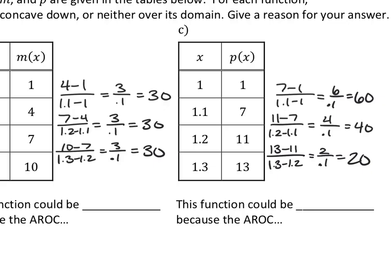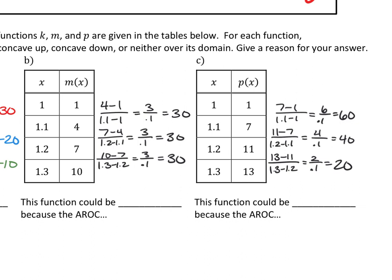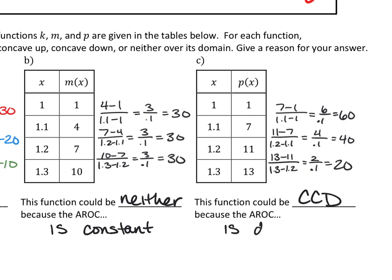Are these the numbers you got for your rates of change? What do we notice about B? It's constant — all of the rates of change are the same number, which means the average rate of change is constant, so it's neither concave up nor concave down. That constant rate of change means it's linear. For the other table, what's happening to my rates of change every time? They're decreasing — so it's concave down, because the average rate of change is decreasing.